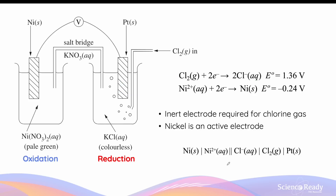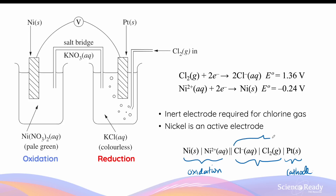When writing the shorthand notation to represent a galvanic cell using an inert electrode, we must also include it in the notation. The oxidation half cell is always written first — which is the nickel metal and nickel ions — followed by the content of the reduction electrolyte solution involved in the reduction equation, which are the chloride ions (aqueous) and chlorine gas. We separate the two using a vertical line because the two chlorine species are from different states. We then include the cathode, which is the inert platinum electrode, as you would normally do for any active cathode. Collectively, on the right-hand side of the notation, we still have the components of a reduction half cell, including the inactive or inert electrode.